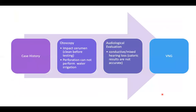On the day of testing, I always start with the case history — that's definitely a topic for a different webinar. Then I do otoscopy. Otoscopy is mandatory, not optional, because if you have impacted cerumen you will not be able to test the patient with calorics. And if you see a perforation, you cannot perform water irrigation — you have to go with air irrigation. I also try to always have a recent audiogram because conductive or mixed hearing loss affects calorics and needs to be noted in my report.